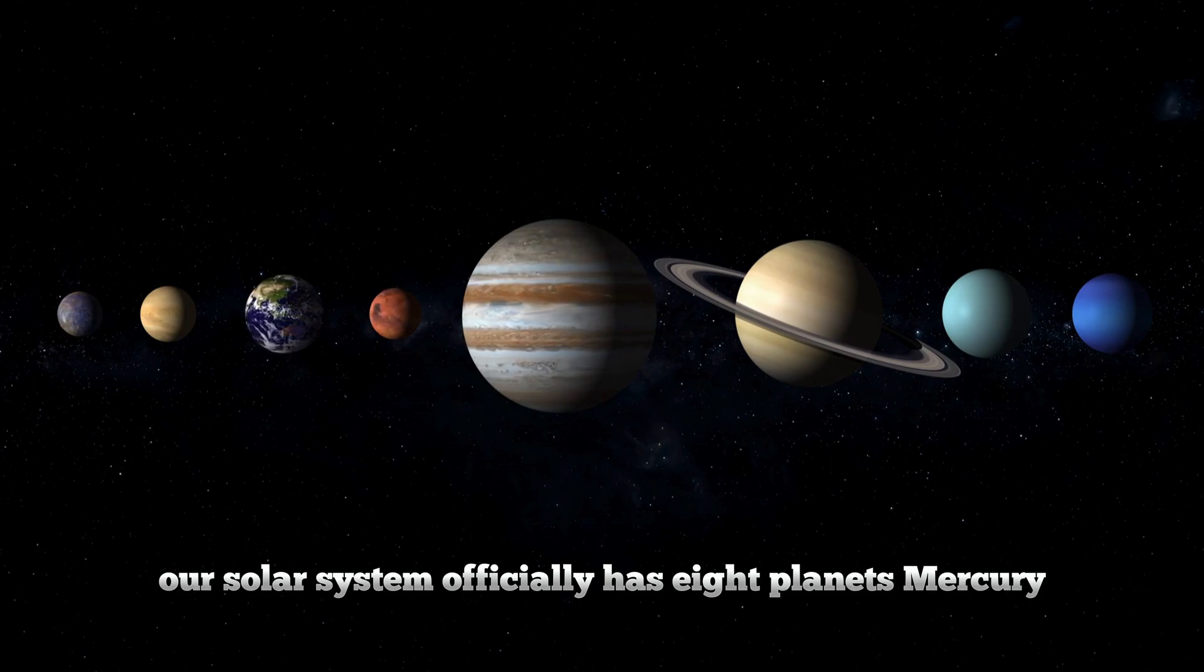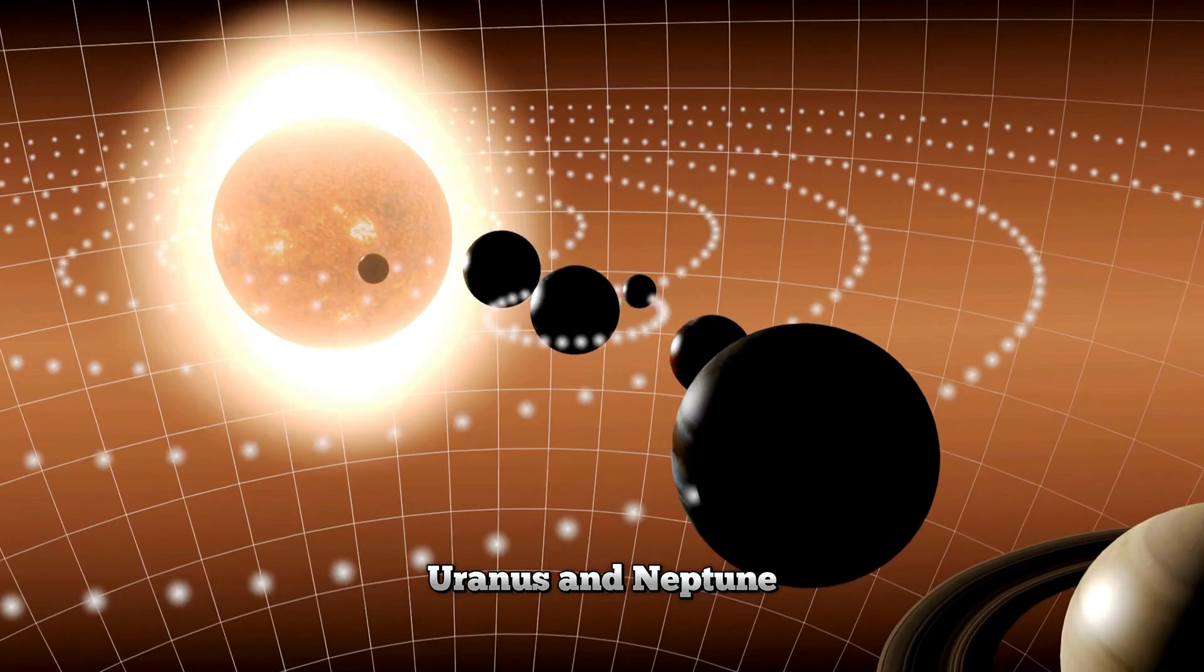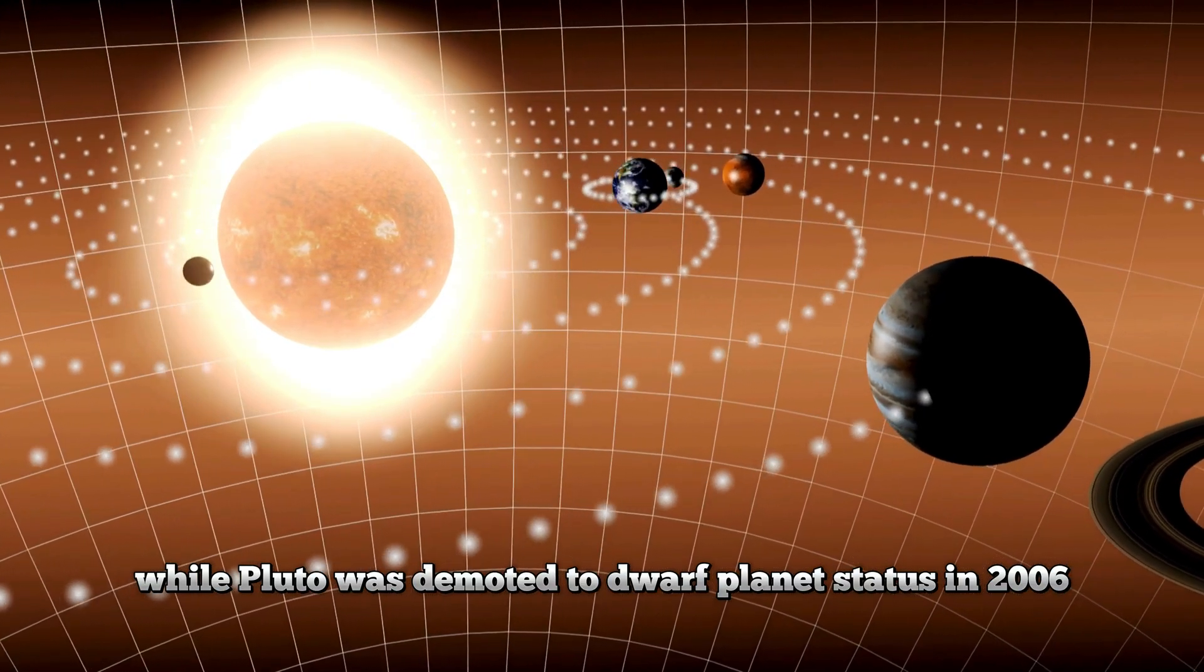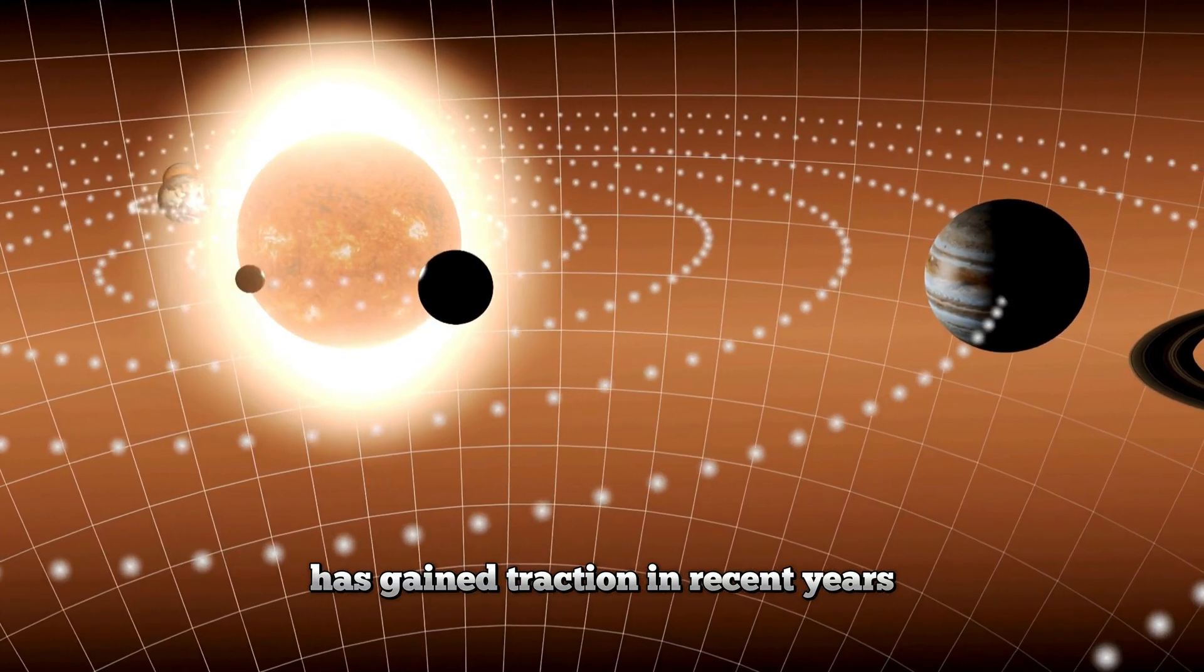Our solar system officially has eight planets: Mercury, Venus, Earth, Mars, Jupiter, Saturn, Uranus, and Neptune. While Pluto was demoted to dwarf planet status in 2006, the hypothesis of a ninth planet has gained traction in recent years.